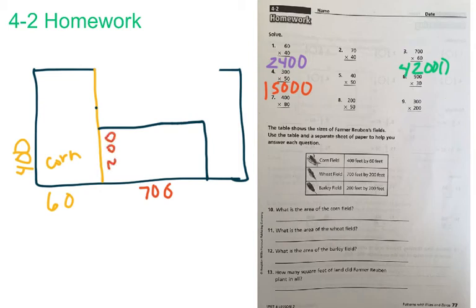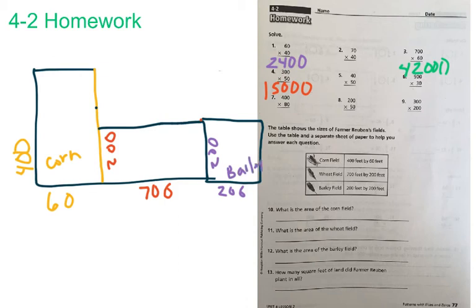And then our last one is our barley field, and it's 200 by 200. And so we'll go ahead and make this another extension of this one, 200 by 200. And we'll label that one 200 by 200. And again, this one's barley. I'm going to go ahead and label my wheat because I see that I forgot to do that.